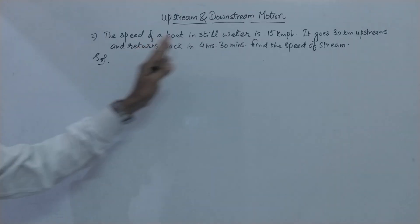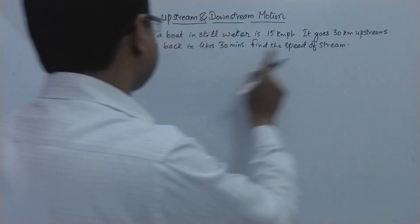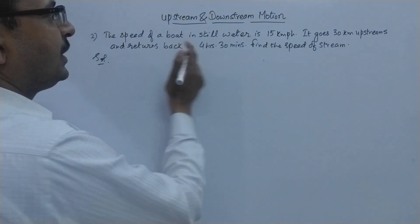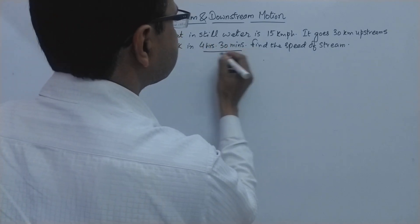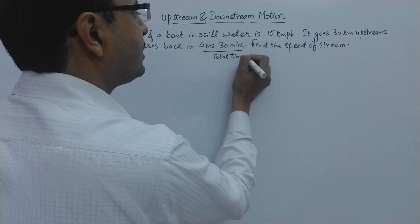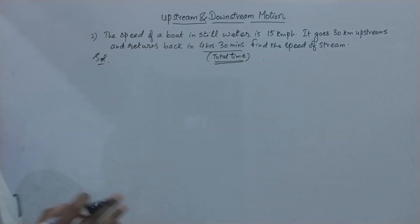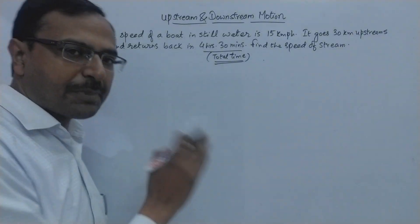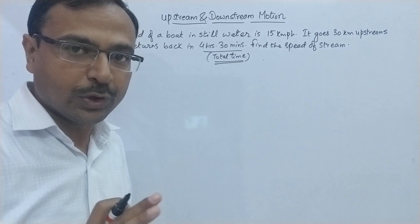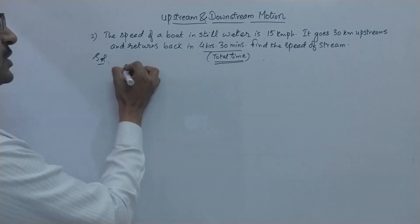So this is another question of similar nature. Only one difference is, it goes 30 km upstream and returns back in 4 hours 30 minutes. So this is the total time which is given. So in the previous question I have taken comparative time but here it is the total time. So instead of subtracting, we need to add the two times in this case. Other things remain the same.